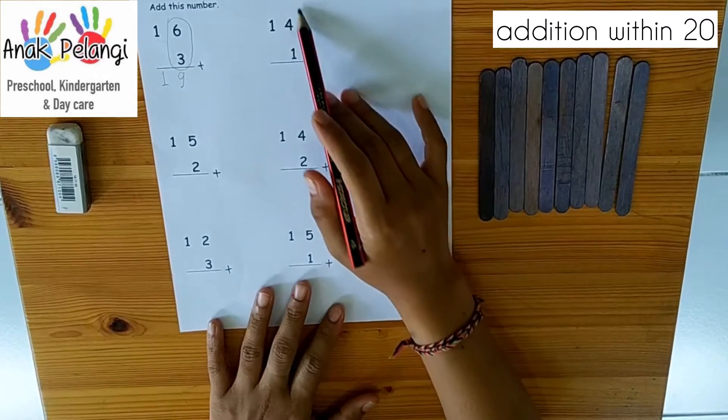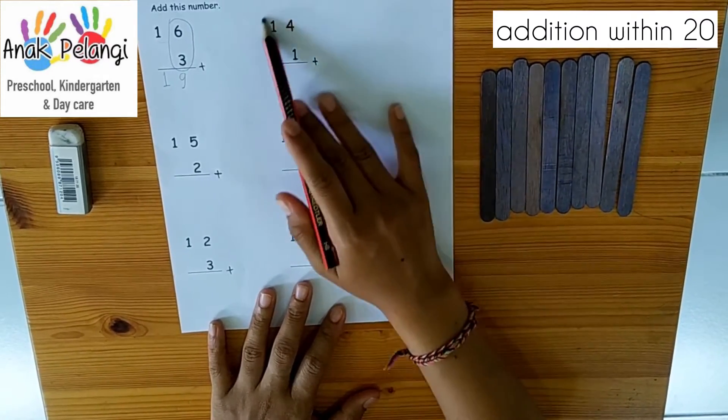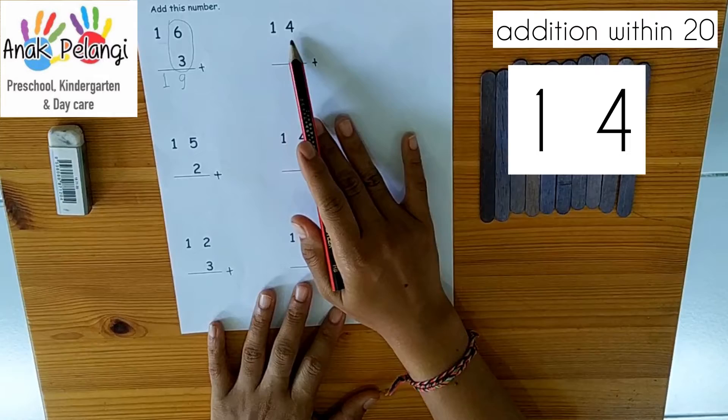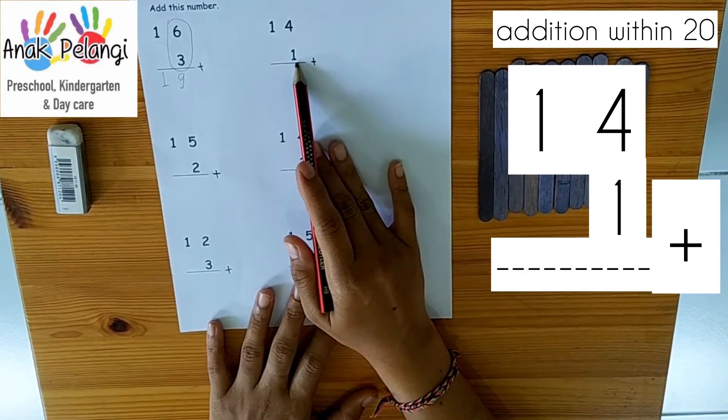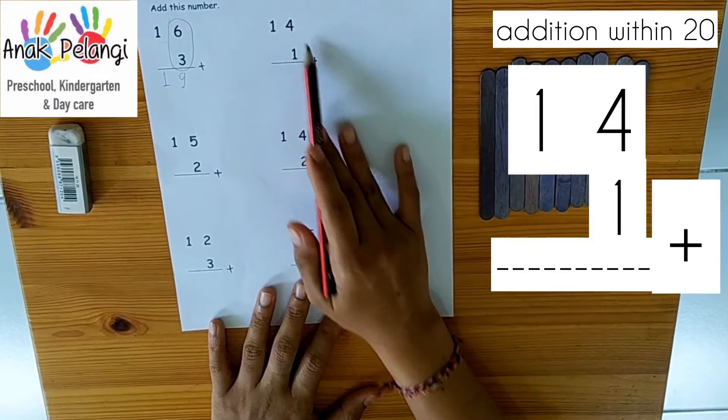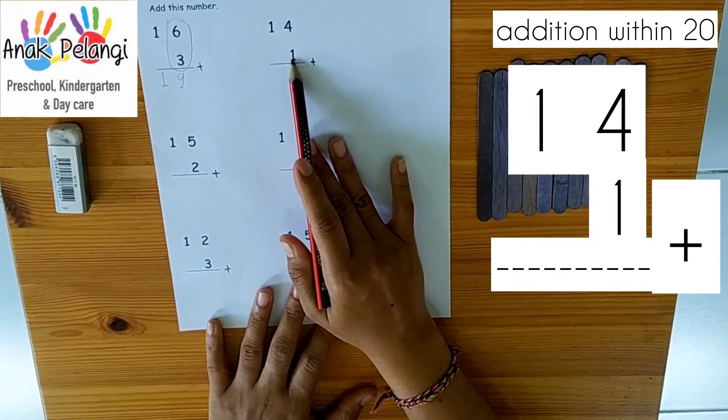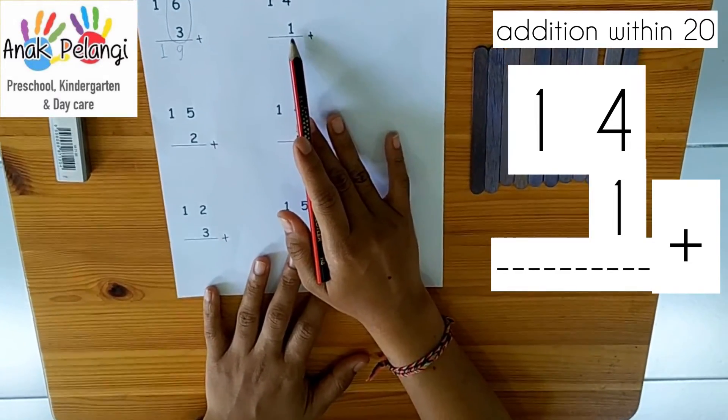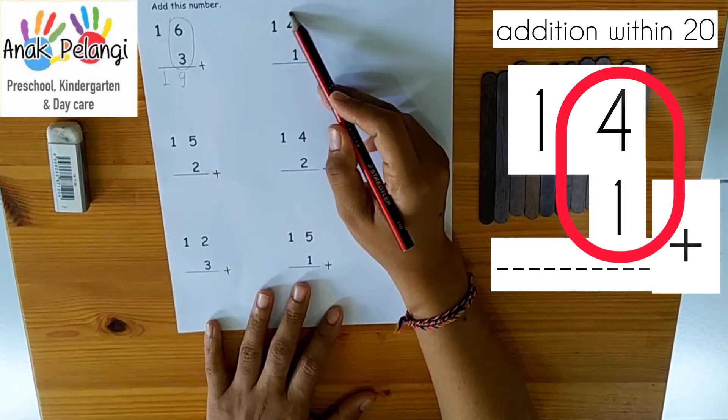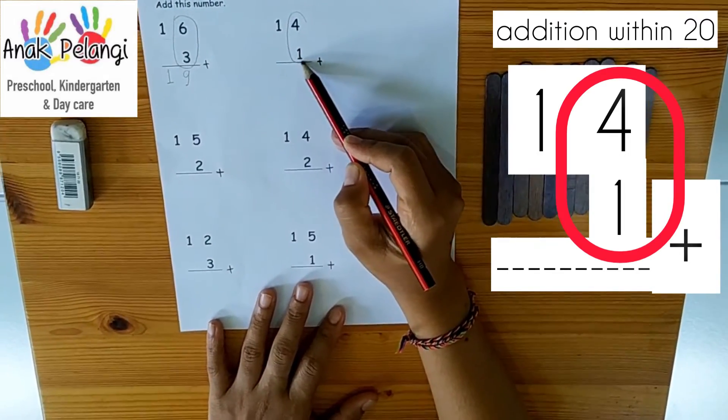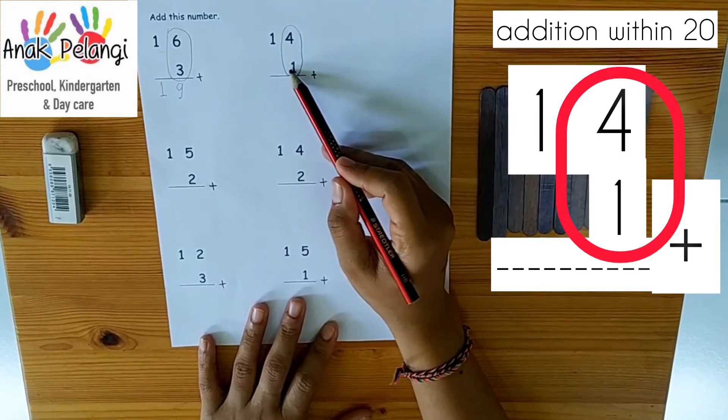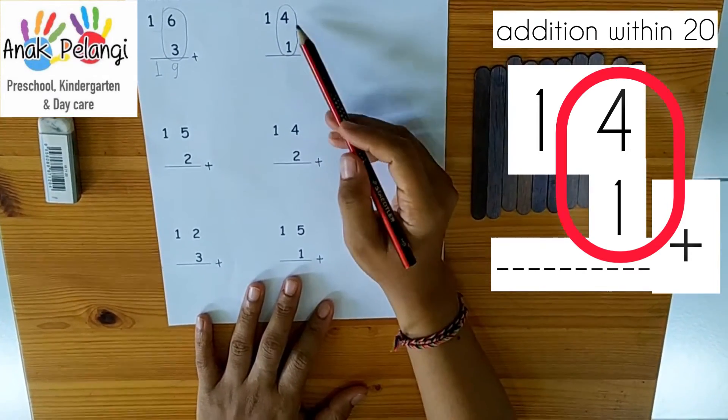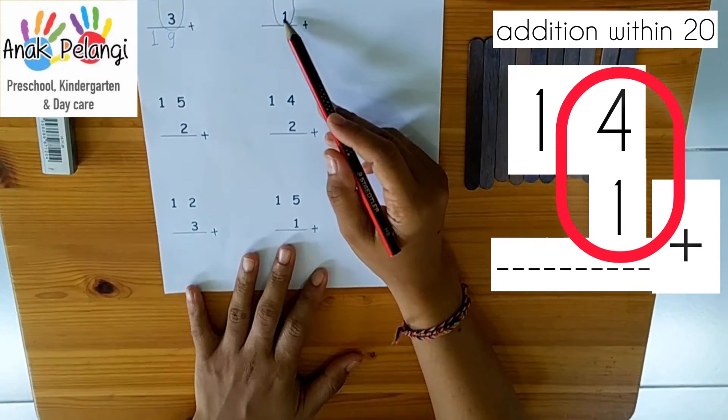Look at these numbers here. 14 plus 1. Remember to add the numbers in the ones position first. 4 plus 1. I repeat, 4 plus 1.